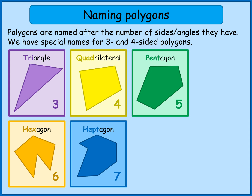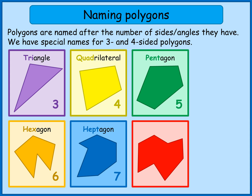The next one has actually got eight sides, so that would be an octagon. We can think of English words that start with 'oct' — so octopus, an octopus has got eight legs. So an octagon has got one, two, three, four, five, six, seven, eight sides.